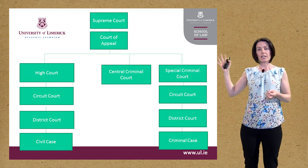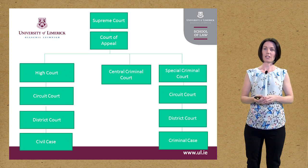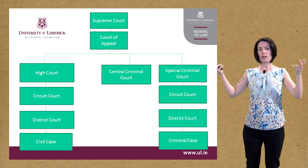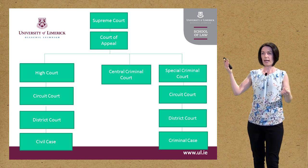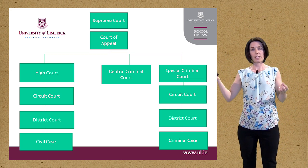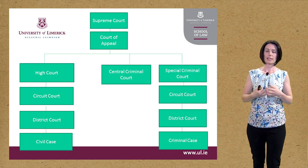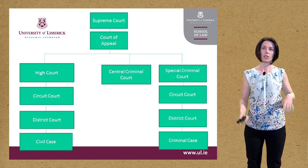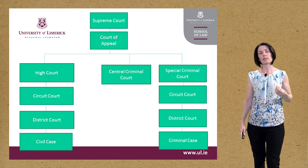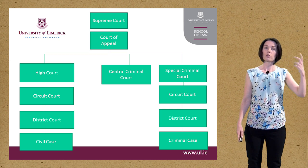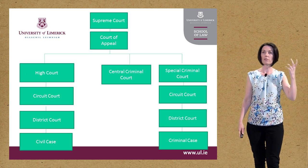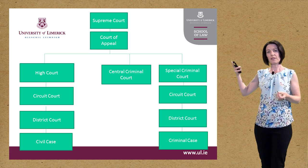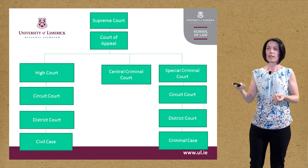There is a diagram here showing the hierarchy of the court system. The civil jurisdiction and the criminal jurisdiction go up through the hierarchy of courts in a similar way. In the criminal jurisdiction, the High Court sits as the Central Criminal Court; in civil jurisdiction it will sit as the High Court. There are also divisions in civil jurisdiction — for example, the Commercial Court for commercial cases. We start with the District Court, then Circuit Court, High Court, Court of Appeal, and Supreme Court.